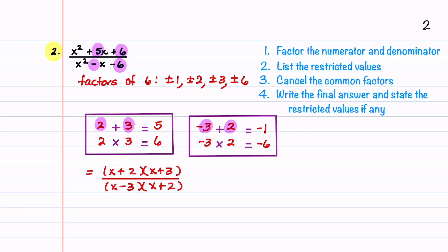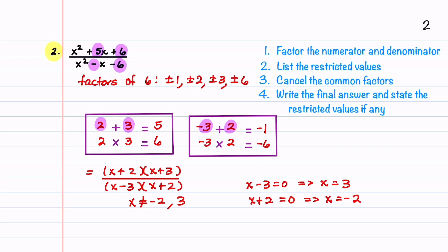To find our restricted values, we'll set x minus 3 equal to zero, giving us x equals 3, and then set x plus 2 equal to zero, giving us x equals minus 2. So our restricted values are x is not equal to minus 2 and x is not equal to 3. We'll now cancel our common factors and write down our final answer: x plus 3 divided by x minus 3, with the restriction that x can't equal minus 2 or 3.